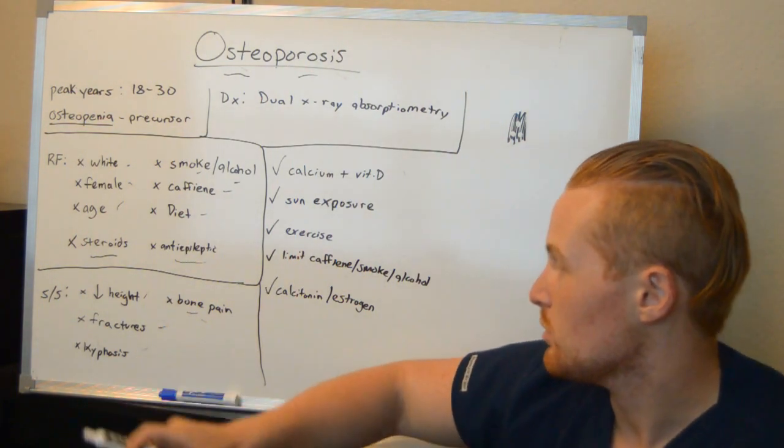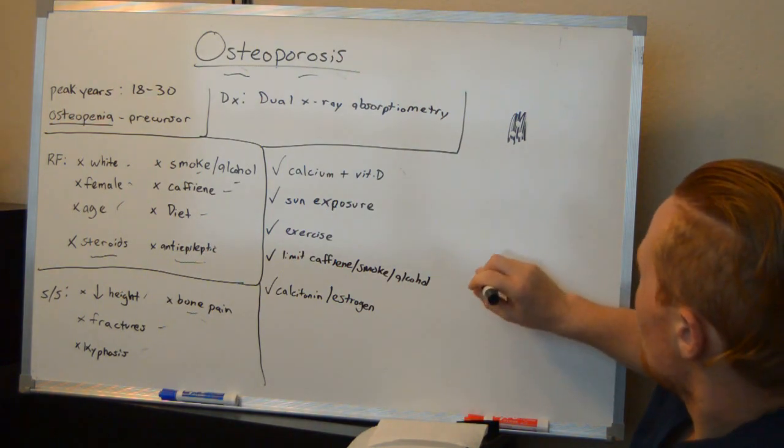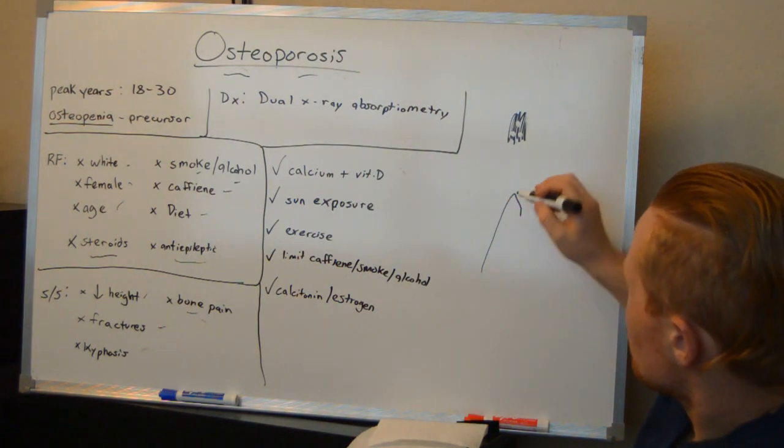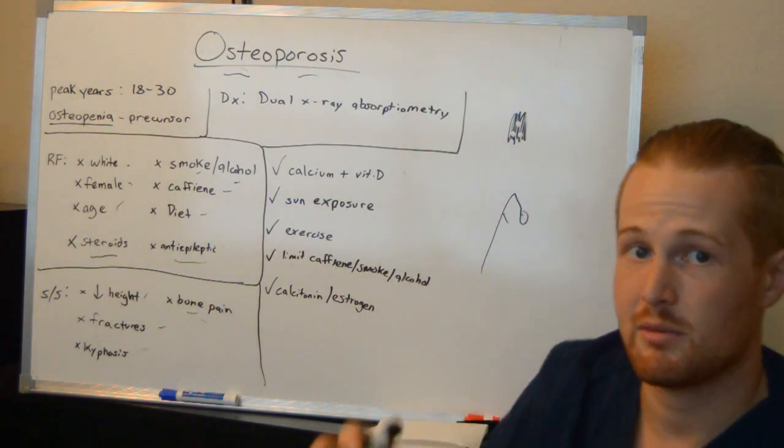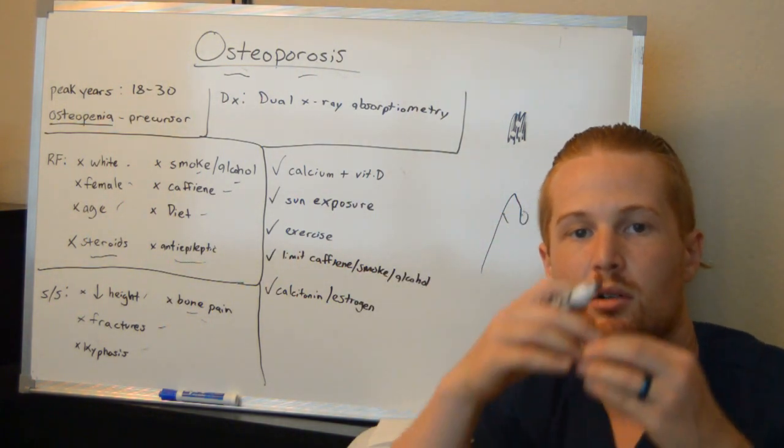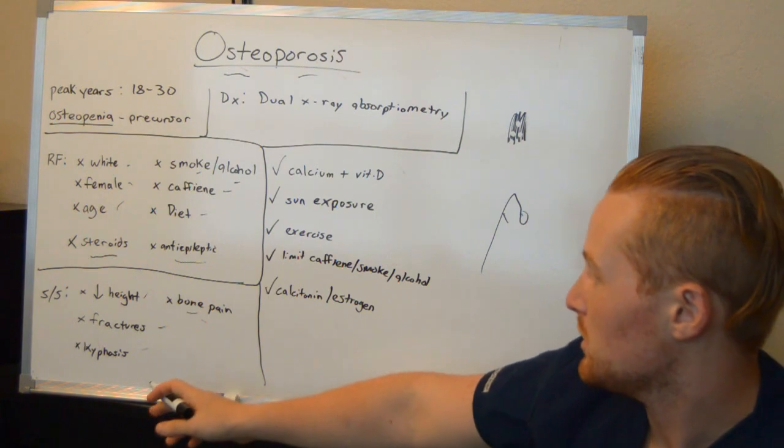And then you have kyphosis. What this is, is you see the old person who's got the really extreme arched back. That arched back is because the bones are so weak and brittle and it causes something called kyphosis.